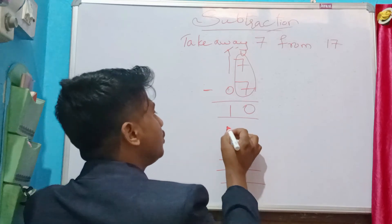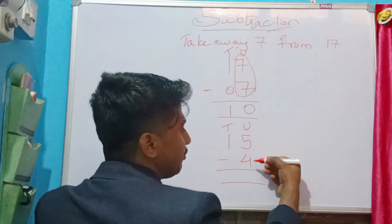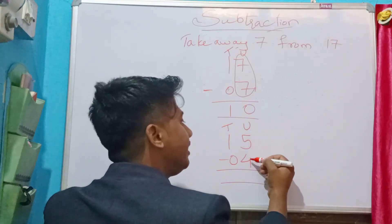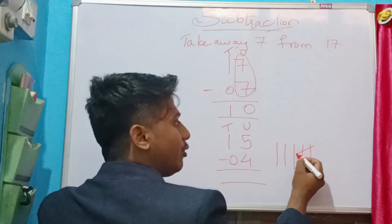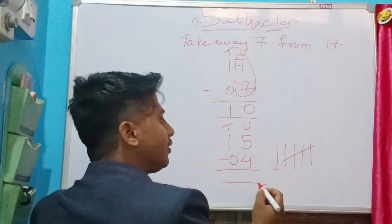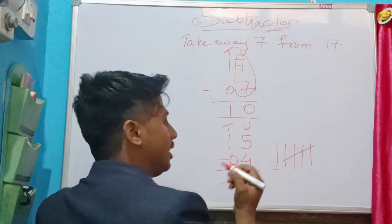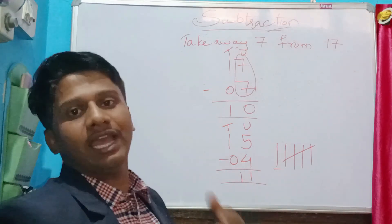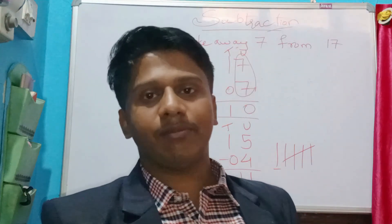One more problem: 15 minus 4. Write tens and units positions. Start from units: 5 minus 4 — cancel four out of five — remaining is 1. Write 1 at units position. Then 1 minus 0 is 1 at tens position. The answer is 11. You can do it either by drawing lines or using the units-tens method — both give the same result.